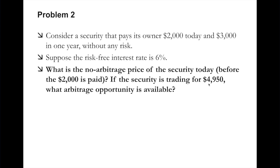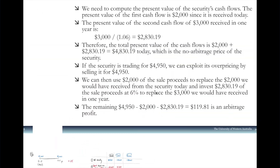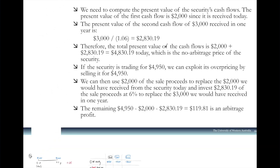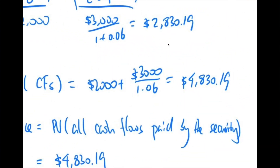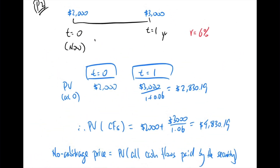If the security is trading for $4,950, what arbitrage opportunity is available? To make things clearer, we put everything on a timeline. At time zero, you have $2,000 — that's already in today's terms, so no discounting needed. At time one, you have $3,000 divided by (1 + 0.06), which equals $2,830.19. So how do you work out the present value? That's how you calculate the no-arbitrage price. The present value of cash flows at time zero is $2,000, plus $2,830.19 at time one discounted back.